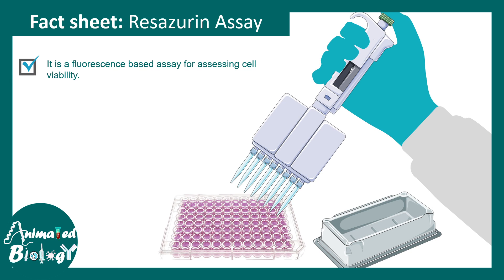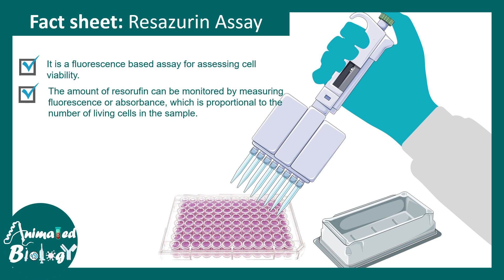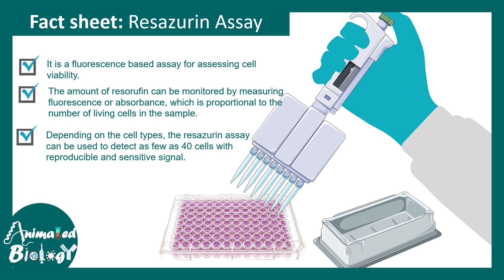Now let's talk about key points regarding this assay. It's a fluorescence-based assay for assessing cell viability. The amount of resorufin — the pink dye — can be monitored by measuring the fluorescence. Depending on the cell type, one can use as few as 40 cells to perform this assay reproducibly, which means it is very sensitive.